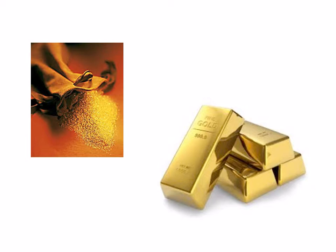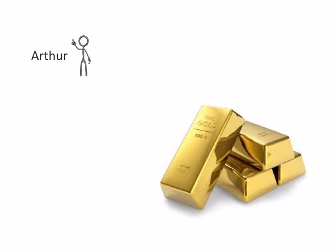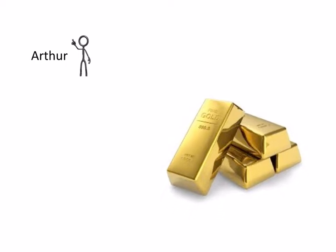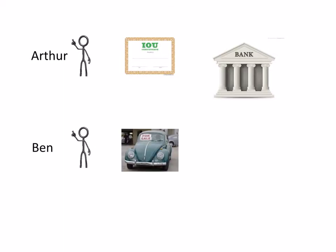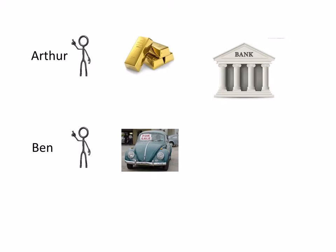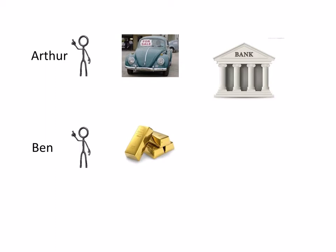So I need somewhere to store my gold until I need it. Arthur takes his gold bars and stores them in the bank. The bank issues Arthur with an IOU — in effect a credit note saying that Arthur owns the gold. So if Arthur wants to buy a second-hand car from Ben, he exchanges his note with the bank for the gold bars the bank was looking after for him. He then trades the gold bars for the car. But what does Ben do with the gold bars? He deposits them with the bank, of course, which issues him with a credit note, or IOU, as proof of ownership of the gold.